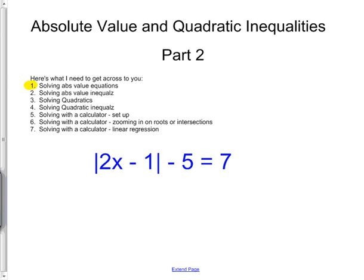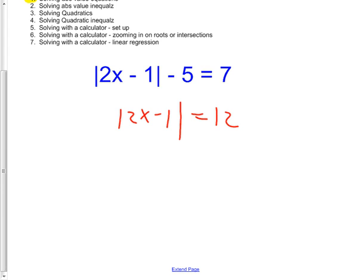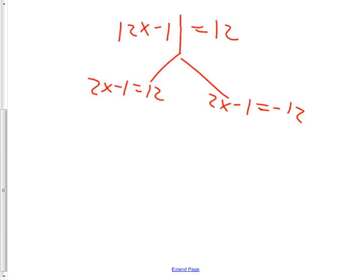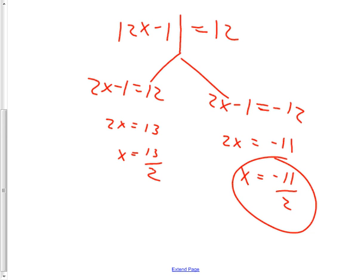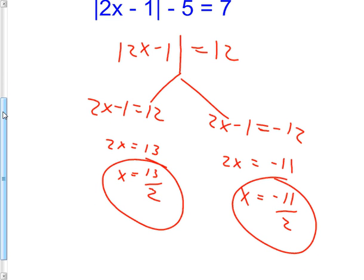Adding five to both sides gives us the absolute value of 2x minus 1 equals 12. Then I split it into two equations: 2x minus 1 equals 12, and 2x minus 1 equals negative 12. Adding one to both sides on the first gives 2x equals 13, so x equals 13 over 2. On the other one, 2x equals negative 11, so x equals negative 11 halves. Two answers.